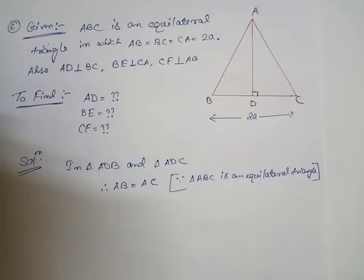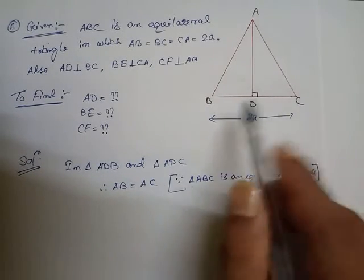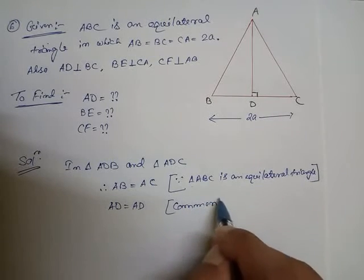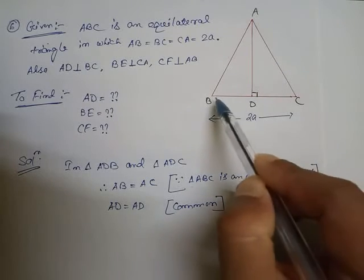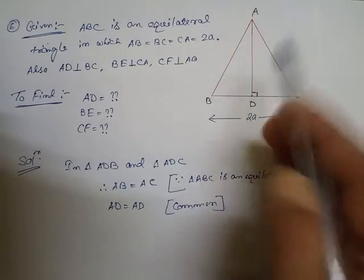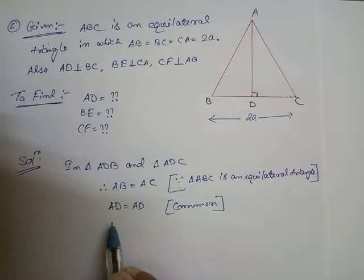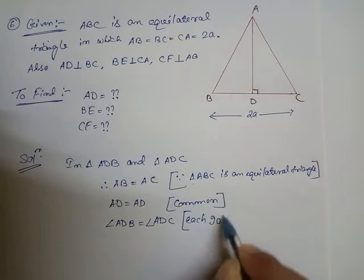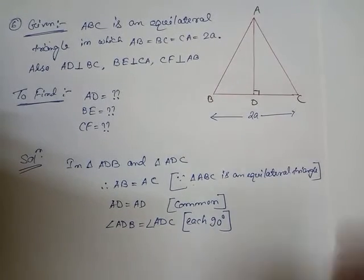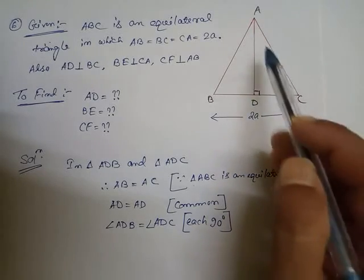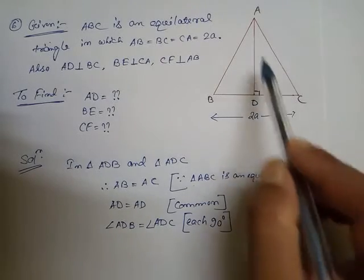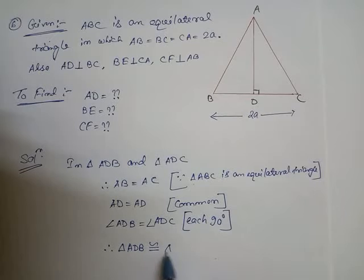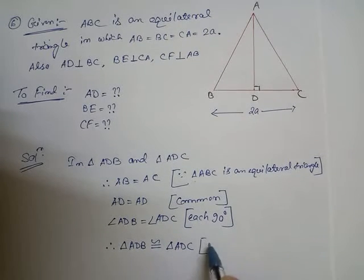The second condition: AD = AD, which is the common side for both triangles. Third, angle ADB = angle ADC = 90 degrees each, since AD is perpendicular to BC. So we write: AB = AC (equilateral triangle), AD = AD (common side), angle ADB = angle ADC = 90°. Therefore, triangle ADB is congruent to triangle ADC by the Side-Side-Angle criteria.